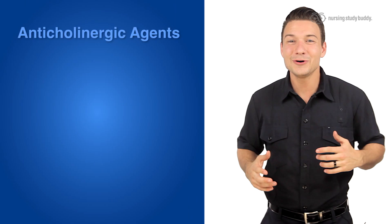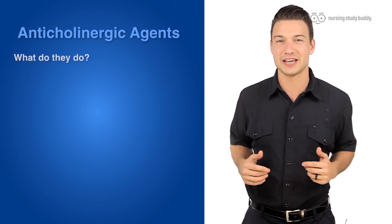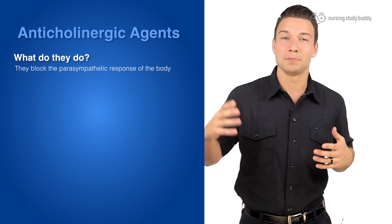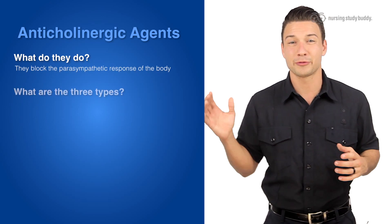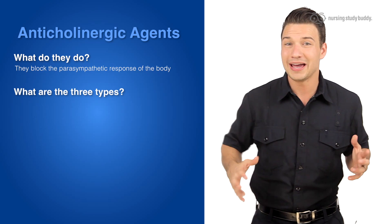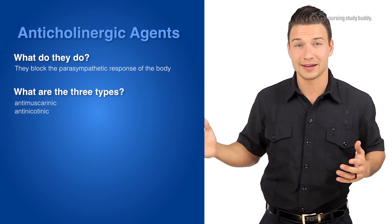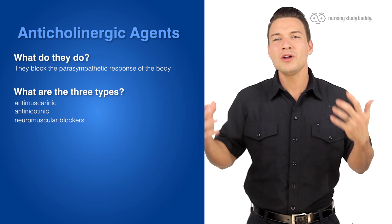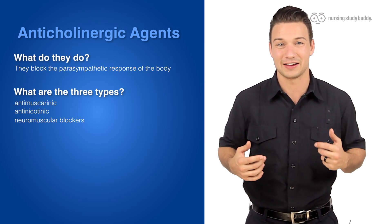To recap, this video covered anticholinergic agents in three major sections. First, we talked about how these agents block the parasympathetic response of the body. Then we covered the three types: antimuscarinic, antinicotinic, and neuromuscular blockers. And lastly, we went over a mnemonic to show some of the major side effects.